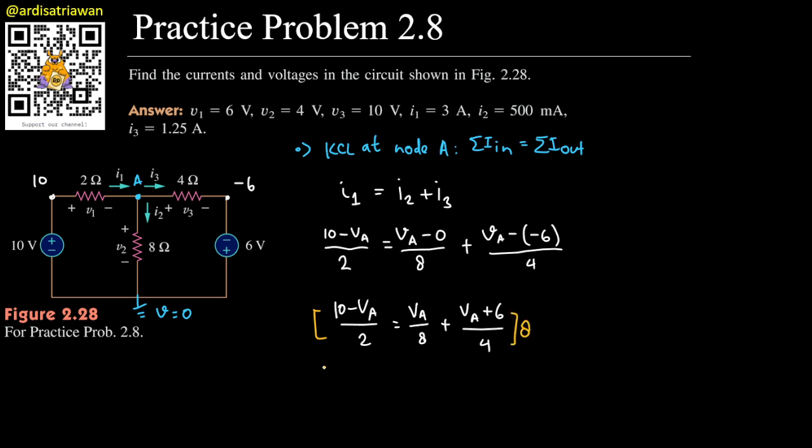To simplify the calculation, I want to multiply both sides by 8 so all the denominators will be cancelled out. 2 and 8 will cancel into 4, so we'll have 40 - 4Va. That will equal to Va, and this one will cancel into 2Va.